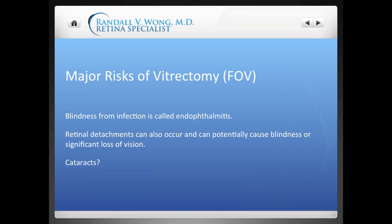What are the major risks of vitrectomy? The major one I'd be concerned with is whether or not we cause you to go blind. Blindness is possible if you get an infection inside the eye, called endophthalmitis. If you were to get an internal infection in the eye, that could be potentially blinding. The chance of that from vitrectomy is less than one chance in 10,000. Cataract surgery, on the other hand, that same infection can occur as often as one chance in 2,000. So in terms of blindness risk, vitrectomy is actually much safer than cataract surgery.